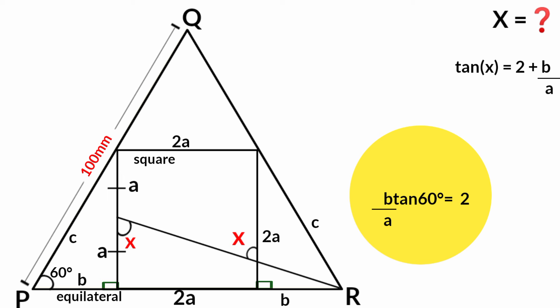We go ahead and divide both sides by tan 60 degrees. Here tan 60 degrees will cancel tan 60 degrees, and here 2 divided by tan 60 degrees, if you press your calculator, is 1.1547. So b over a equals 1.1547.